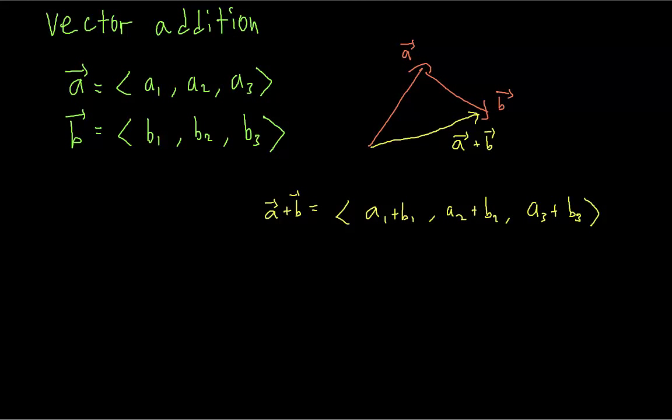Subtracting vectors works the same way, because you're just adding the negative. Geometrically, you can see that if we have a vector B, and then we add the difference A minus B, then that just gets A. You can think of A minus B as the vector that you need to add to B in order to get A.